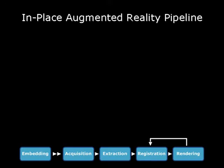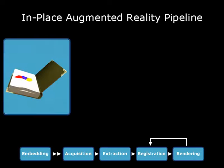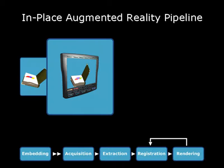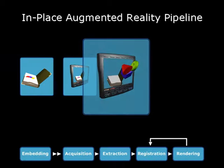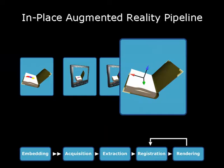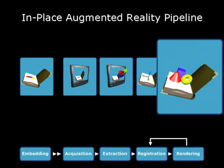Let's take a look at the process pipeline of an in-place augmented reality application. First, a dual perception representation of the model is created and printed. In runtime, the printed representation is acquired by the AR system. The virtual models are then extracted from the acquired image as a one-time step. In every frame, the virtual models are registered onto the scene and rendered.